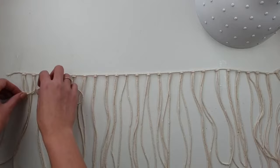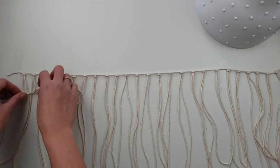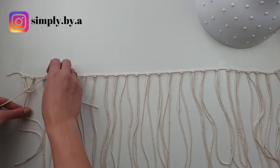I take the first four loose cords and create a square knot. I don't pull it all the way up. I make it a few centimeters lower.